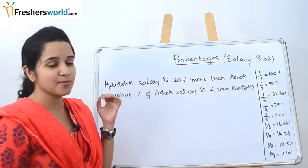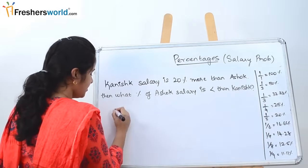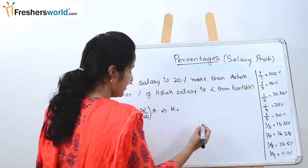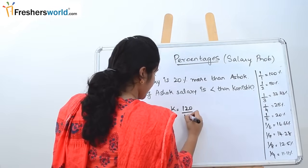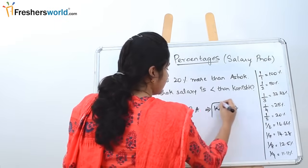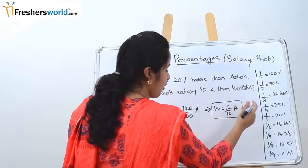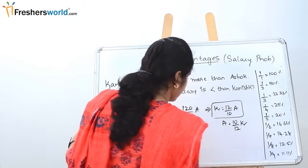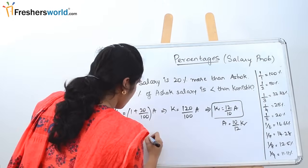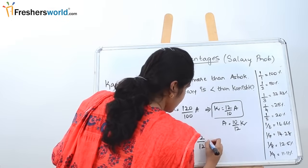First question: Kanish's salary is 20% more than Ashok's. What percentage is Ashok's salary less than Kanish's? Kanish = (1 + 20/100) × A = 120/100 × A = 12/10 × A. Rearranging: A = 10/12 × K. Initially Ashok's fraction was 1; now it is 10/12 of K. So 1 − 10/12 = 2/12 = 1/6. Since 1/6 = 16.66%, Ashok's salary is 16.66% less than Kanish's.